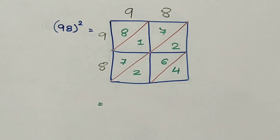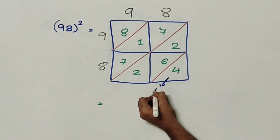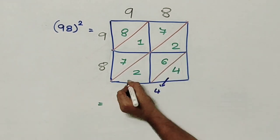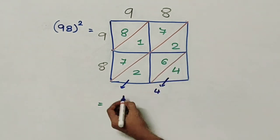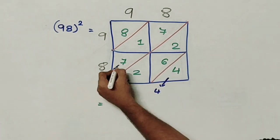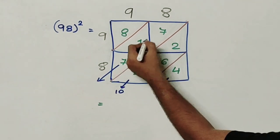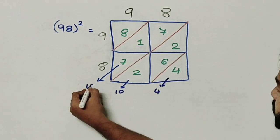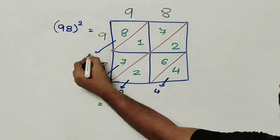So let us find the final answers. This comes as 4. From this diagonal I get 2 plus 6 plus 2 which makes it 10. 7 plus 1 plus 7 which makes it 15 and 8.